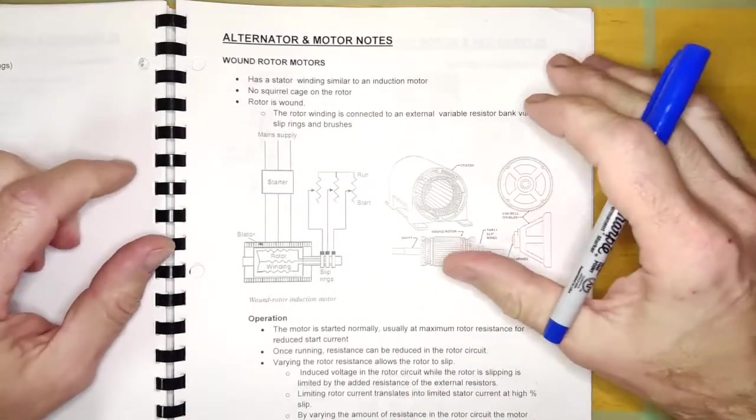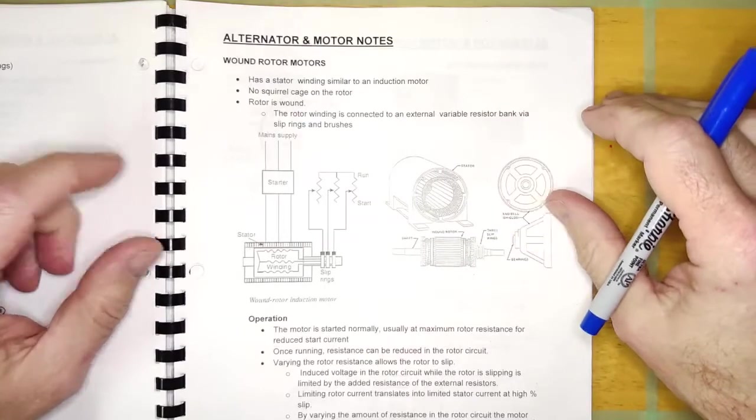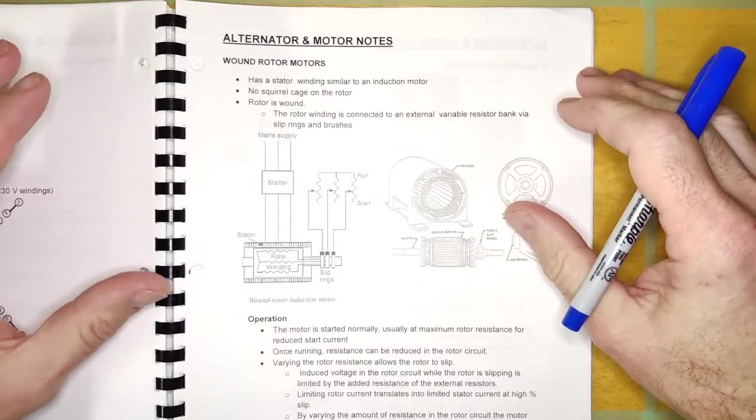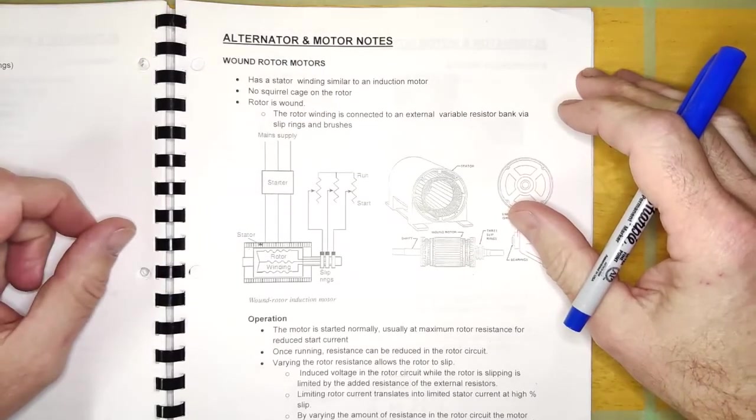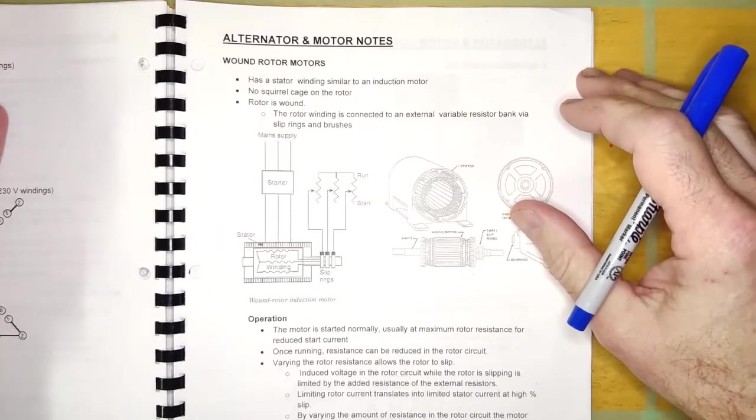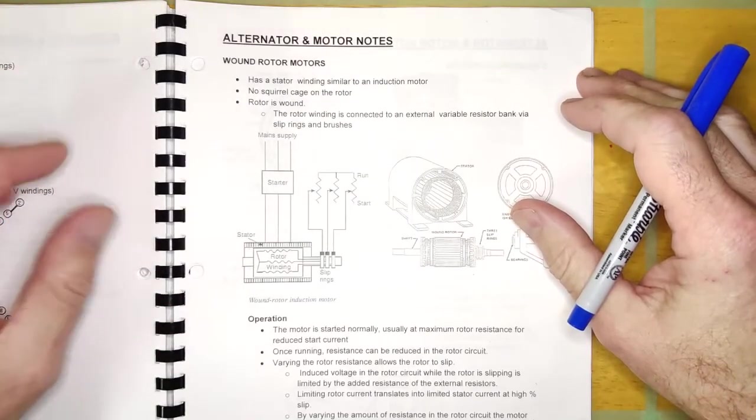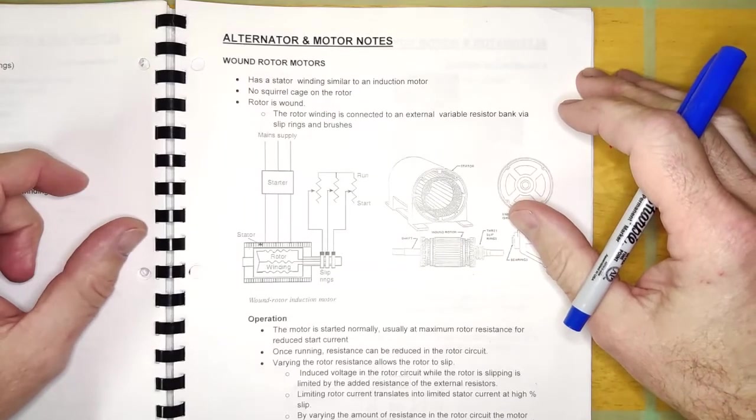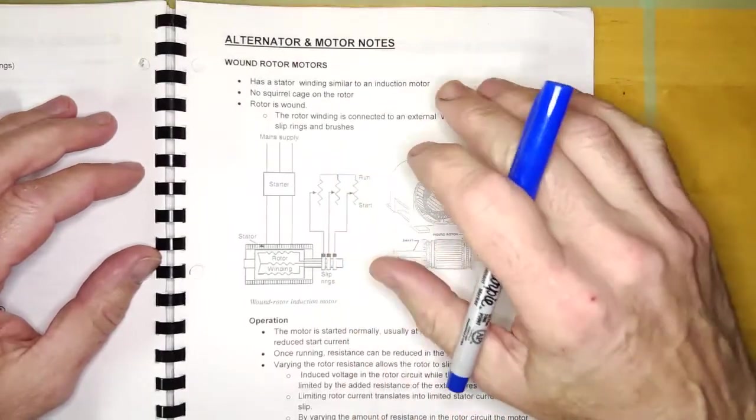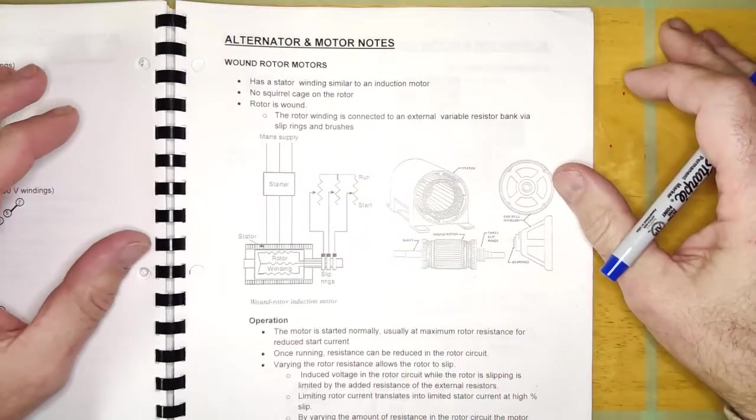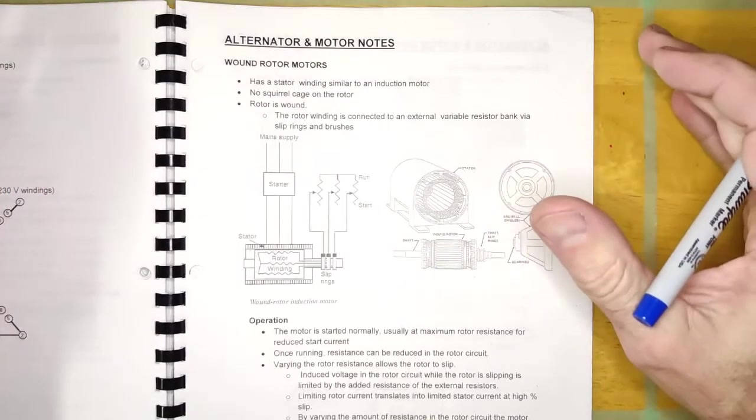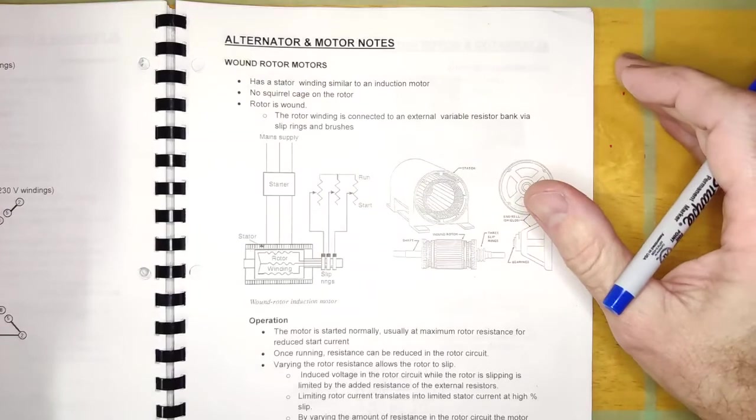Now, the reason we're going to learn about wound rotor motors is the problem with three-phase induction motors is, and always has been, that it's kind of difficult to control the speed. As you are aware, the speed of a three-phase induction motor is determined by the frequency that you connect it to. And that's because that frequency is going to establish the sync speed of the motor and the rotor speed is going to be slightly less than the sync speed because it's going to slip.